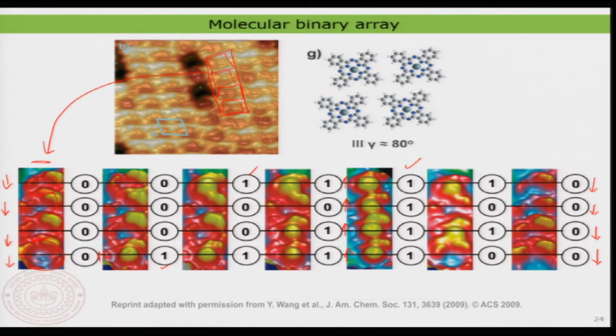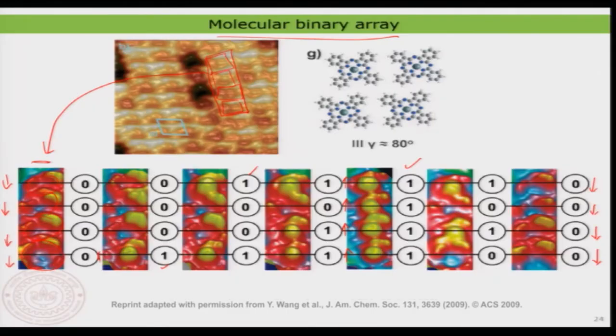What is so interesting about creating an array of information with molecules? The molecule is small — it is in the order of a nanometer — so you can pack more information in a smaller space compared to current technology. If you use something called a molecular binary array you can store more information. The switchability is also very high — the speed of switching is actually in the order of picoseconds. In the future, you may be using something called molecular computers where each information bit is substituted by a molecule rather than a transistor.